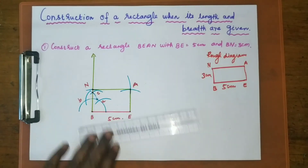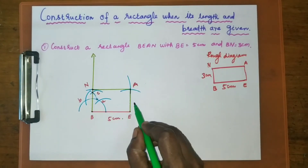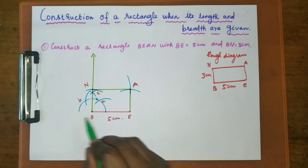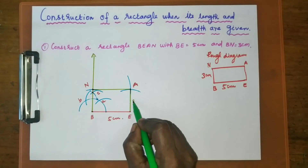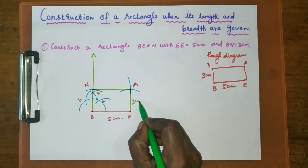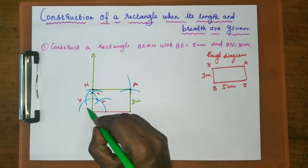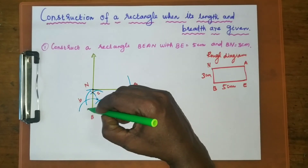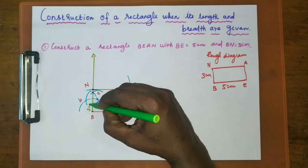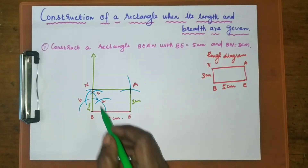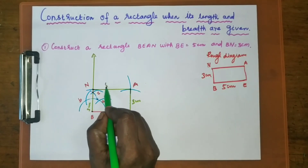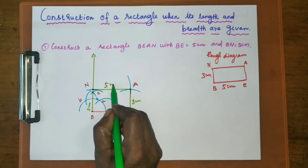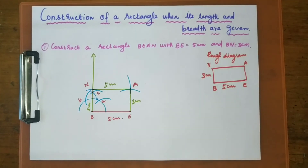So now this side is 3 cm and the opposite side is also 3 cm, confirming the rectangle is complete.